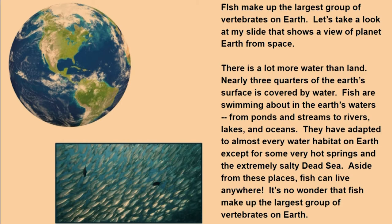Fish make up the largest group of vertebrates on Earth. Let's take a look at this slide that shows a view of the planet Earth from space. The green represents land and the blue represents the water on Earth. There is a lot more water than land — nearly three quarters of the Earth's surface is covered by water. Fish are swimming about in the Earth's waters, from ponds and streams to rivers, lakes, and oceans. They have adapted to almost every water habitat on Earth, except for some very hot springs and the extremely salty Dead Sea.